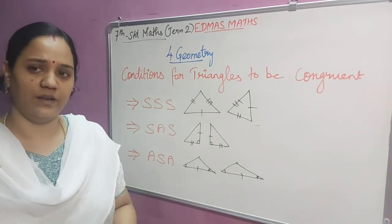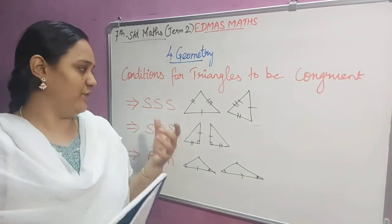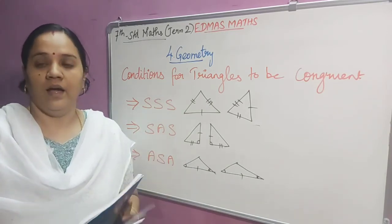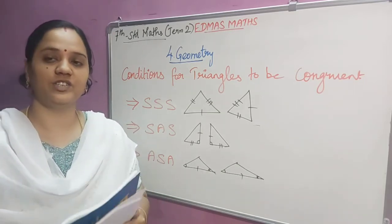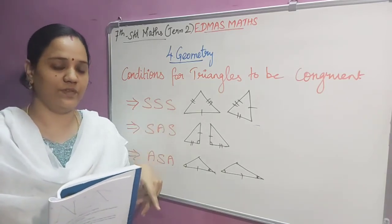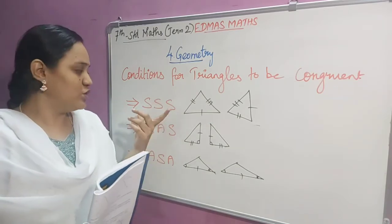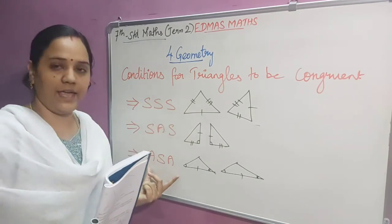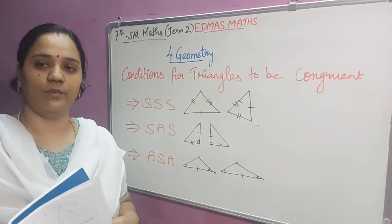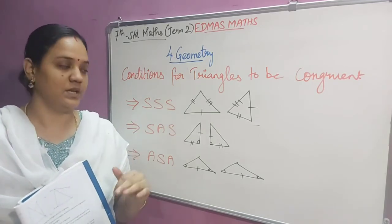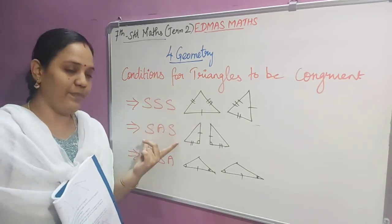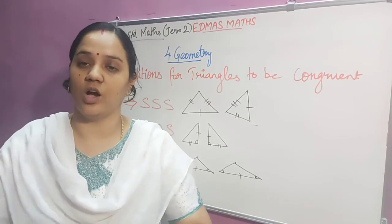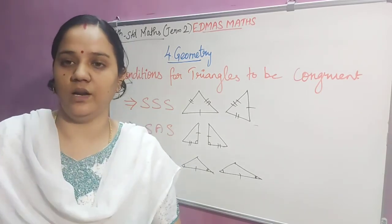We can also construct triangles — that is, if three sides of a triangle are given, or two sides and one angle are given, or two angles and one side are given. In my next videos, I am going to explain construction of a triangle using the SSS, SAS, and ASA methods. In this video, I explained the main concept of congruency of triangles and the three conditions for congruency.